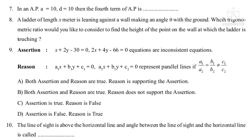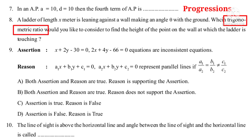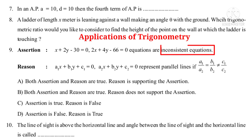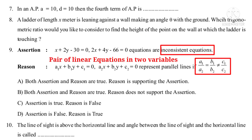Question 7: In an AP, a = 10, d = 10. Then the fourth term of AP is dash — from the chapter Progressions. Question 8: A ladder of length X meters is leaning against a wall making angle θ with the ground. Which trigonometric ratio would you consider to find the height of the point on the wall where the ladder is touching? — from Applications of Trigonometry. Question 9: Assertion: X + 2Y − 30 = 0 and 2X + 4Y − 66 = 0 are inconsistent equations. Reason: A₁X + B₁Y + C₁ = 0 and A₂X + B₂Y + C₂ = 0 represent parallel lines if A₁/A₂ = B₁/B₂ ≠ C₁/C₂. ABCD choice given — from chapter Linear Equations in Two Variables.